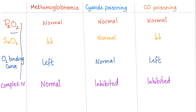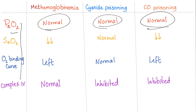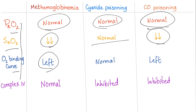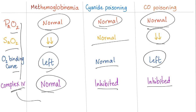Let's compare key lab values. PaO2 — the oxygen floating in arterial blood, not on hemoglobin — is normal in all three: methemoglobinemia, cyanide poisoning, and CO poisoning. SaO2 — oxygen on the hemoglobin — is decreased in methemoglobinemia and CO poisoning, but normal in cyanide poisoning, because cyanide is purely a mitochondrial toxin with nothing to do with hemoglobin. The oxygen dissociation curve shifts left in methemoglobinemia and CO poisoning, but is normal in cyanide poisoning for the same reason. Complex 4 (cytochrome C oxidase, also known as cytochrome AA3) is normal in methemoglobinemia, but inhibited in both cyanide and CO poisoning.